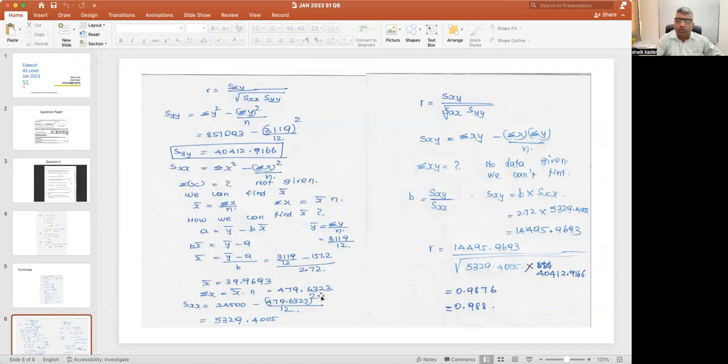I'm substituting all the values: 31,119 over 12 minus 151.2 divided by 2.72 will give 39.9693. If it is multiplied by n, we will get sigma x as 479.6323. So sxx, I'm substituting the sigma x values, I am getting 5329.4005.